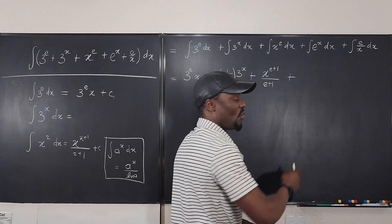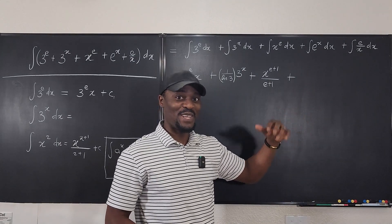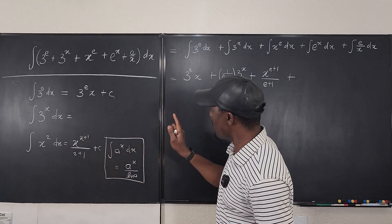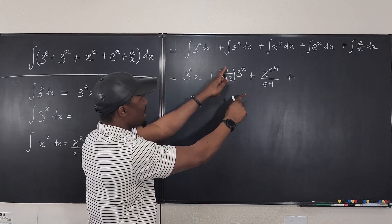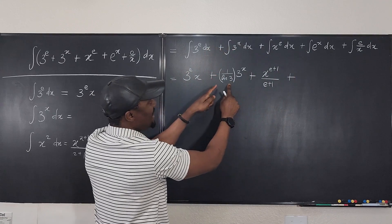This is going to be plus. Oh, this one is the easiest, right? Because the integral of e to the x is just e to the x, which follows the same rule. Where is the rule we used? The rule we used here. See, this 3 and this e are both numbers.